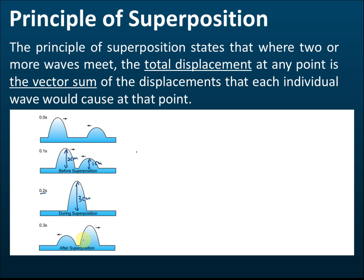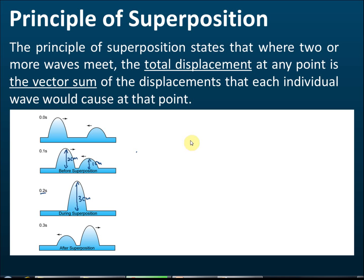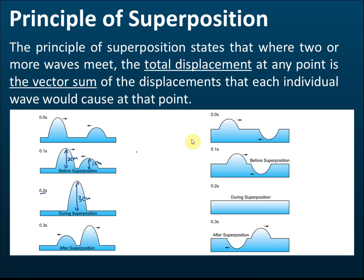So during superposition, the amplitude of the wave becomes 3 cm. After superposition, the two waves separate again — the 1 cm wave moves to the left and the 2 cm wave moves to the right. The principle of superposition states that when the waves meet, the amplitude produced is equal to the sum of the amplitudes before and after the waves meet at that point.